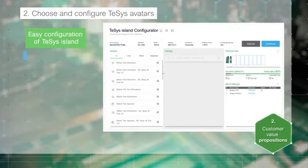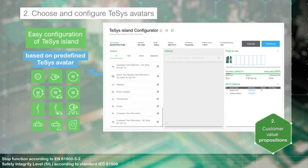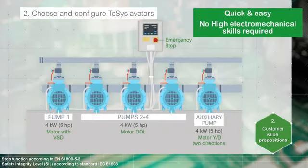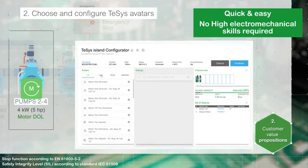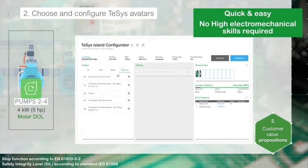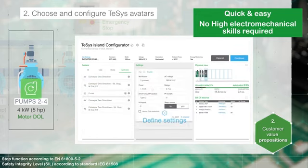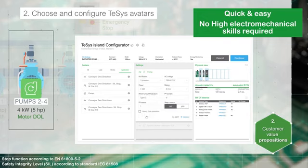Step 2 relies mainly on the predefined Thesis avatar library, saving time in reviewing catalogues to build and size the starters without high electromechanical skills. You can easily and very quickly configure the island — focus on the function, select the Thesis avatar according to the load or application, and define the settings according to the characteristics of the application. Set a number of process variable inputs to receive analog values from sensors such as pressure, flow, or vibration meters.